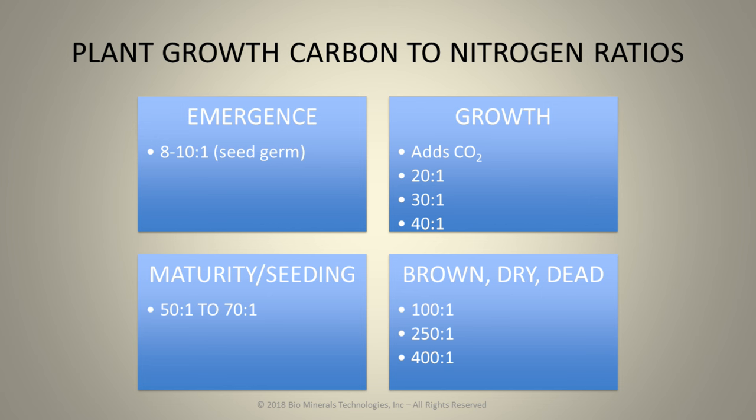As a plant grows, it begins to add way more carbon to its structure than it does nitrogen and the other mineral ratios. So at germination, at emergence, we may have a very small plant at a carbon to nitrogen ratio of as low as 10 to 1. But as that plant grows and it adds more CO2, its carbon to nitrogen ratio will increase to 20 to 1, 30 to 1, even 40 to 1. And as it begins to mature and go into reproduction, it can be as high as 50, 60, 70 to 1.